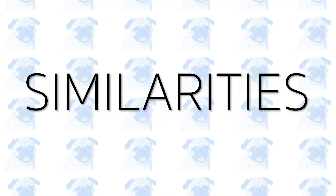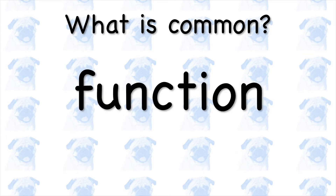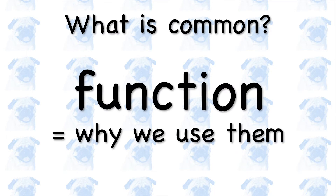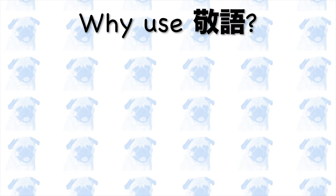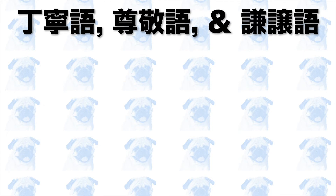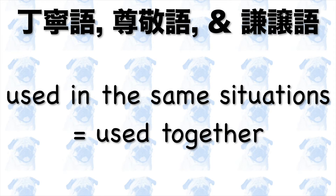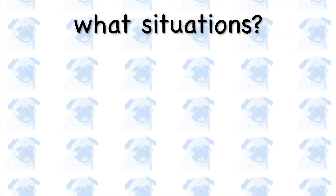Similarities. The main commonality between the three types of 敬語 lies in their function or purpose — that is, why we use them. In short, we use 敬語 in order to be polite and respectful to other people. In addition, we should use these types of 敬語 in the same set of situations, which implies that 丁寧語, 尊敬語, and 謙譲語 are usually used together. So, in what sorts of situations do we use them?